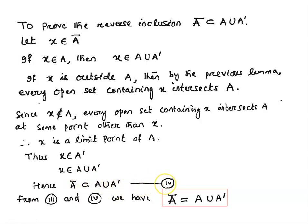From the two inclusions, A ∪ A′ ⊆ Ā and Ā ⊆ A ∪ A′, we conclude Ā = A ∪ A′. So the closure of the set A is equal to the union of A and the set of all limit points of A. This completes the proof of the theorem. In the next lecture, we will study product topology — if X and Y are two topological spaces, then product topology on X × Y. Thank you.